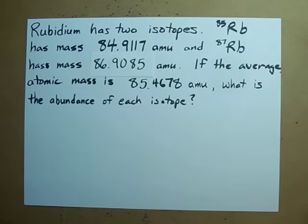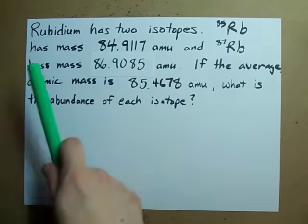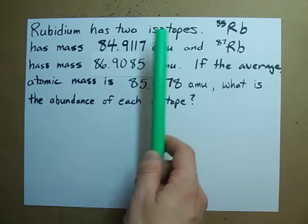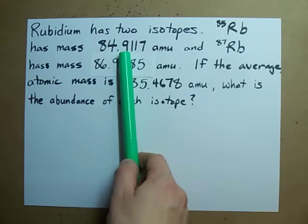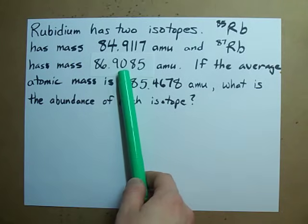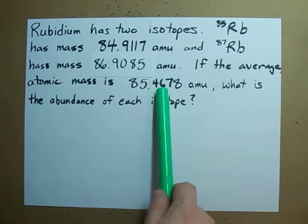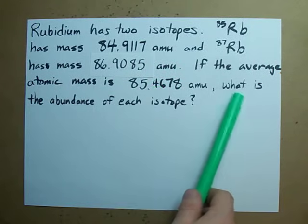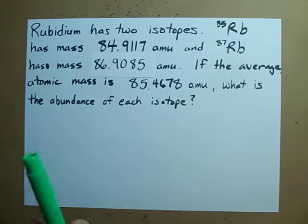Here's a tougher isotopic abundance question. Rubidium has two isotopes. One has this mass, another has this mass, and the average atomic mass of the two is this. They ask what is the abundance of each isotope?